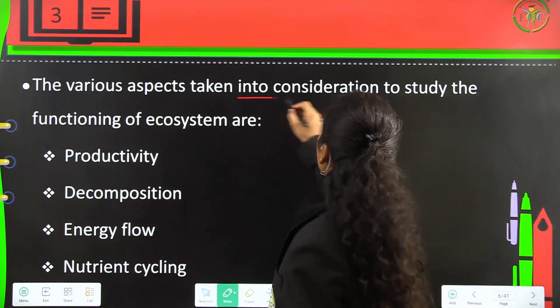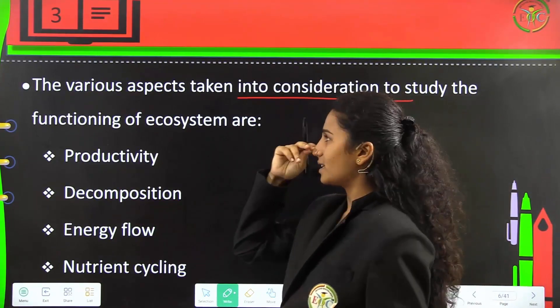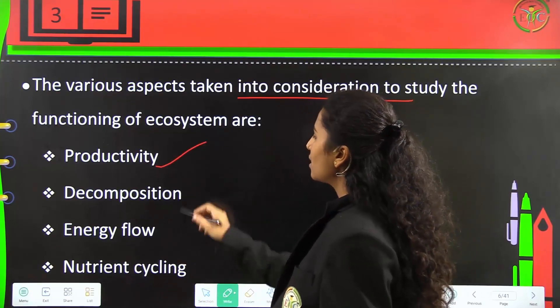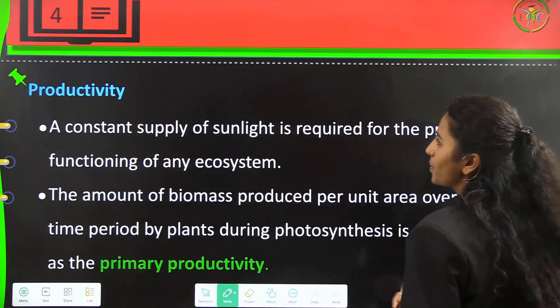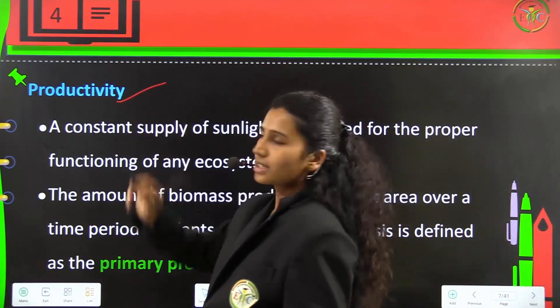Various aspects taken into consideration to study the functioning of ecosystems are productivity, decomposition, energy flow, and nutrient cycling. Firstly, it is productivity.